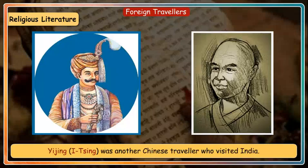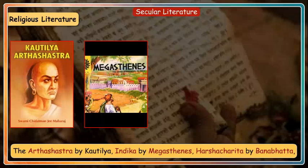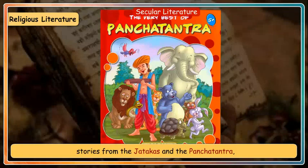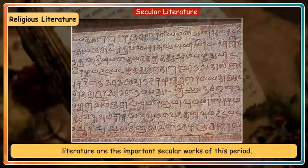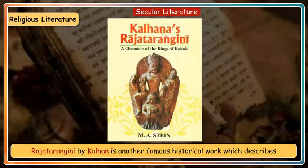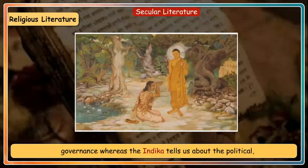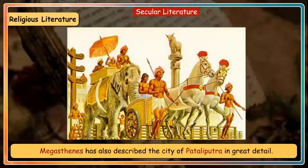Important secular works of this period include the Arthashastra by Kautilya, Indica by Megasthenes, Harshacharitra by Banabhat, stories from the Jatakas and the Panchatantra, the works of Kalidas, the accounts of foreign travellers, and Sangam literature. Raj Tarangini by Kalhan is another famous historical work describing the history of Kashmir till the 12th century. The Arthashastra describes the political system of the time and the art of governance, whereas the Indica tells us about the political, social and economic conditions during the Mauryan rule. Megasthenes also described the city of Pataliputra in great detail.